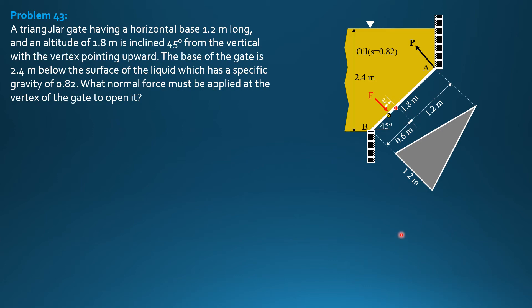So our working equation is summation moment about B equals 0. So P times 1.8 equals F times quantity 0.6 minus E. Where F is specific weight of oil, barred H of oil, area of the gate.